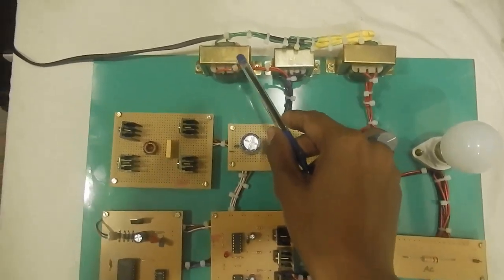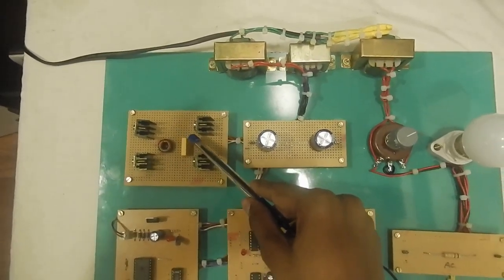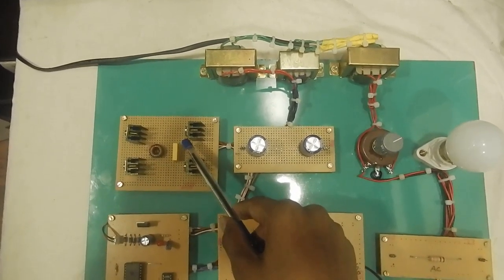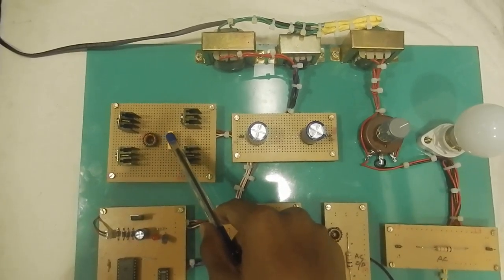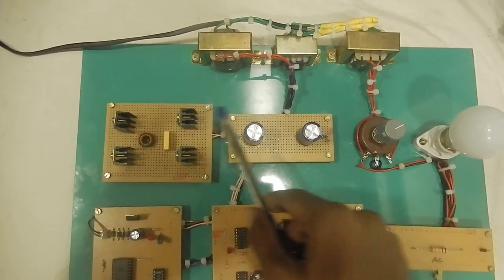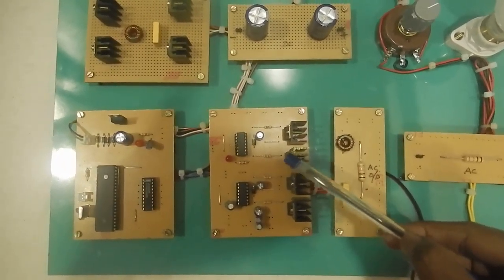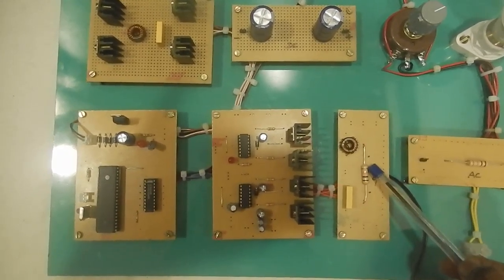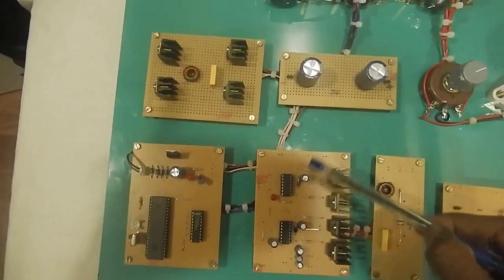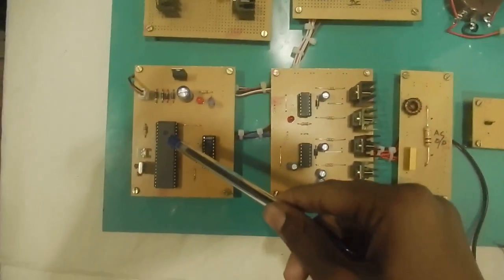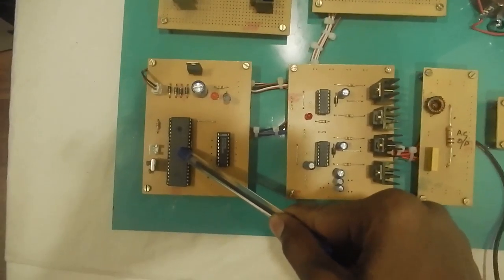The input is given from the transformer to this 4-switch inverter which acts as a rectifier. Here the AC input is transferred into DC, and this is the DC link capacitor, and it's again transferred into AC. The AC load is connected here. To drive these 8 switches, we are going for a PIC microcontroller which is 16877A, a 40-pin IC.